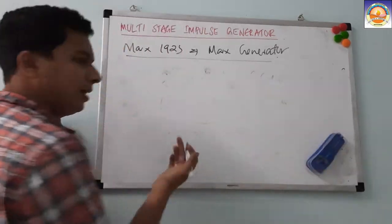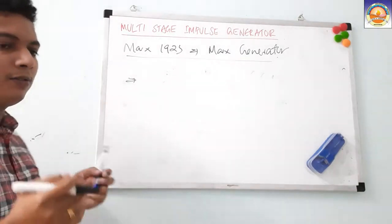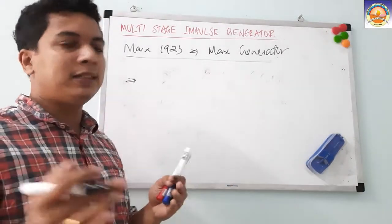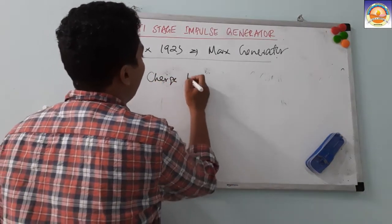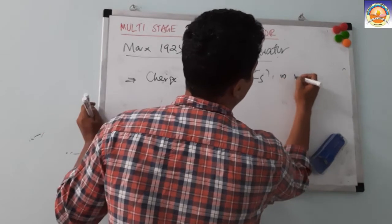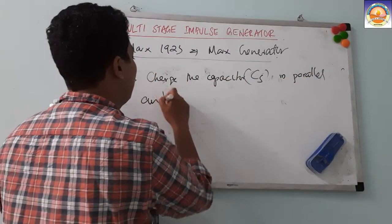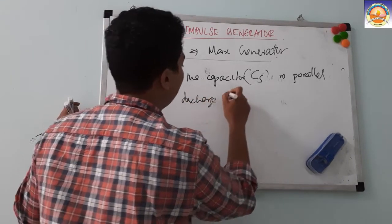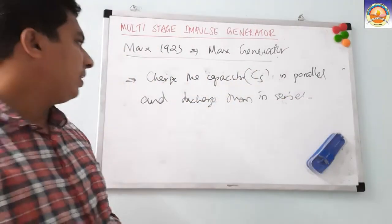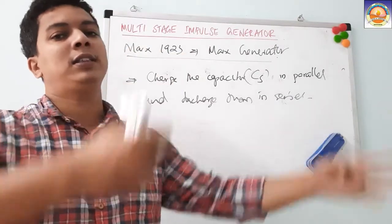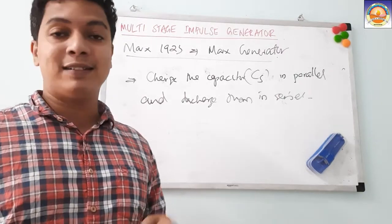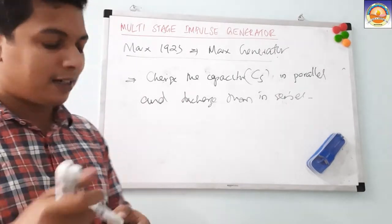Marx's idea is very simple: the whole problem is that we cannot use one big capacitor. So instead, we charge multiple capacitors Cs in parallel, and then discharge them in series through the spark gaps. This was the concept of Marx — charge the capacitances in parallel so all get charged at the same instant, then discharge them in series.